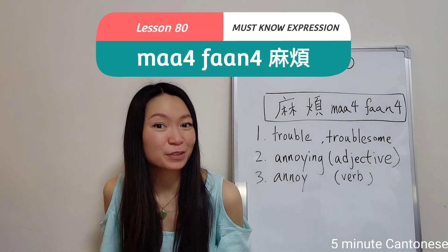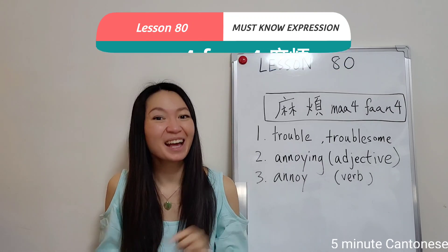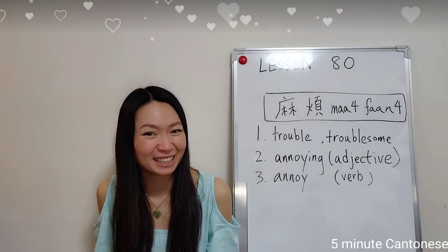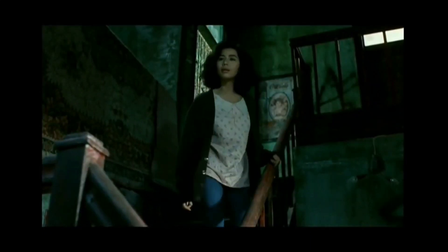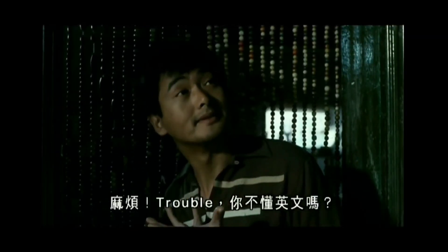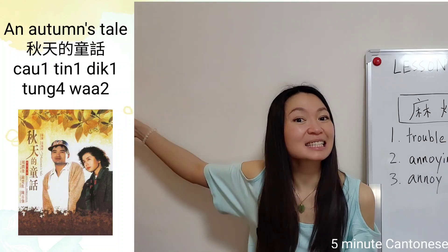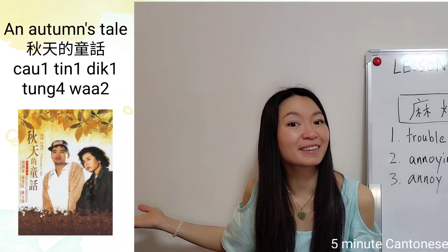Today, let's talk about a very common expression in Cantonese. Let's get started. First of all, what does it mean by 麻煩? Let's see how Chao Yun-Fan explained it. In the movie clip: 等我一會，我會穿衣服，很快啊。 兩隻茶包。 你有什麼茶包啊？ 麻煩啊，茶包。你不懂英文嗎？ This is a movie clip from 秋天的童話, a movie from 1987.